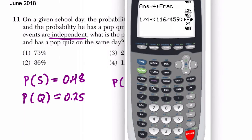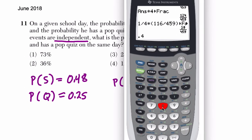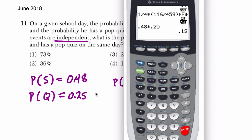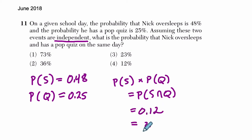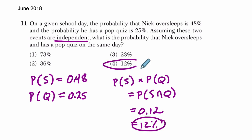So here we have 0.48 times 0.25, and that gives us 0.12. So that equals 0.12, which is — move the decimal over twice — 12%. And we're done. Choice four. Thanks.